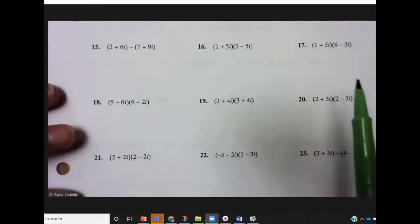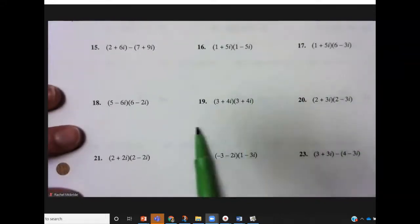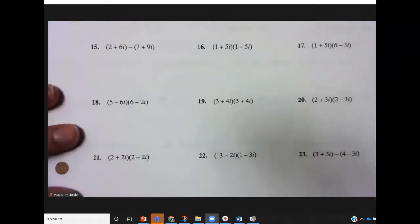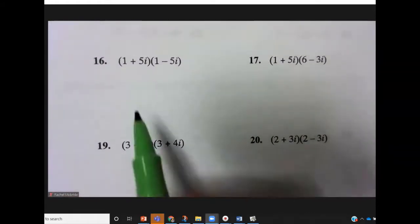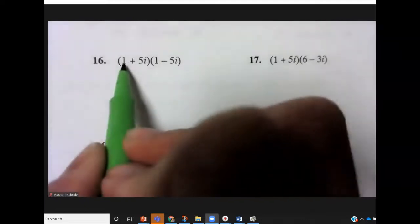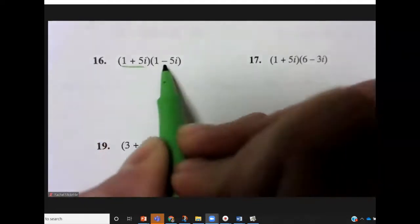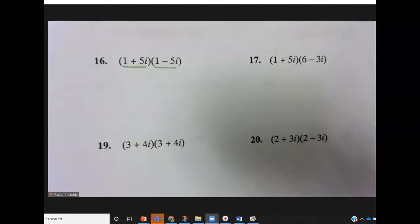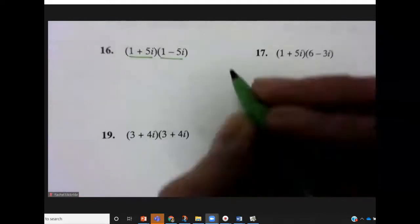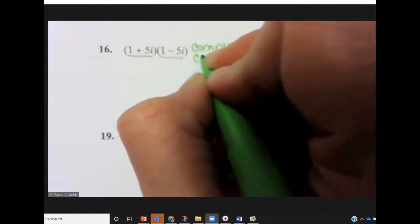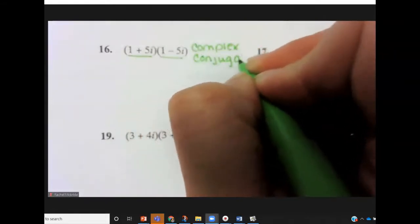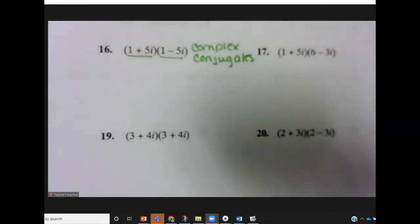I do want to look at an example like 16 to 20 because those are our foils. So let's say for example we do something like 16. 1 plus 5i and 1 minus 5i are called complex conjugates of each other. So this is an example where you have two complex conjugates.